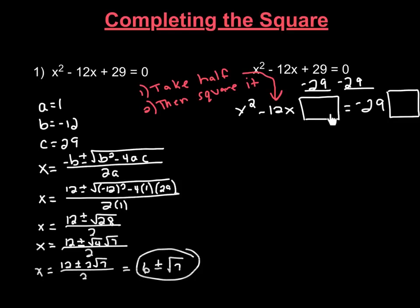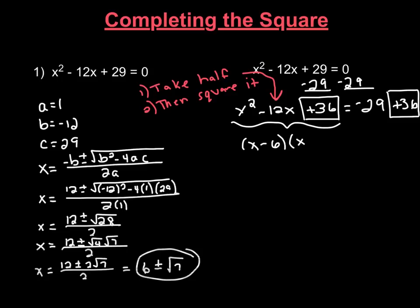So what we're going to do is we're going to add 36 to the left-hand side of the equation. But if we're going to add it to the left-hand side of the equation, in order to keep our equation balanced, we have to also add it to the right-hand side of the equation. So then on the left-hand side of the equation, what you'll see is we have a trinomial here, and we want to factor it. Two numbers that multiply to 36 and add to negative 12 are negative 6 and negative 6. So we have x minus 6 times x minus 6, which I'm just going to rewrite as x minus 6 squared.